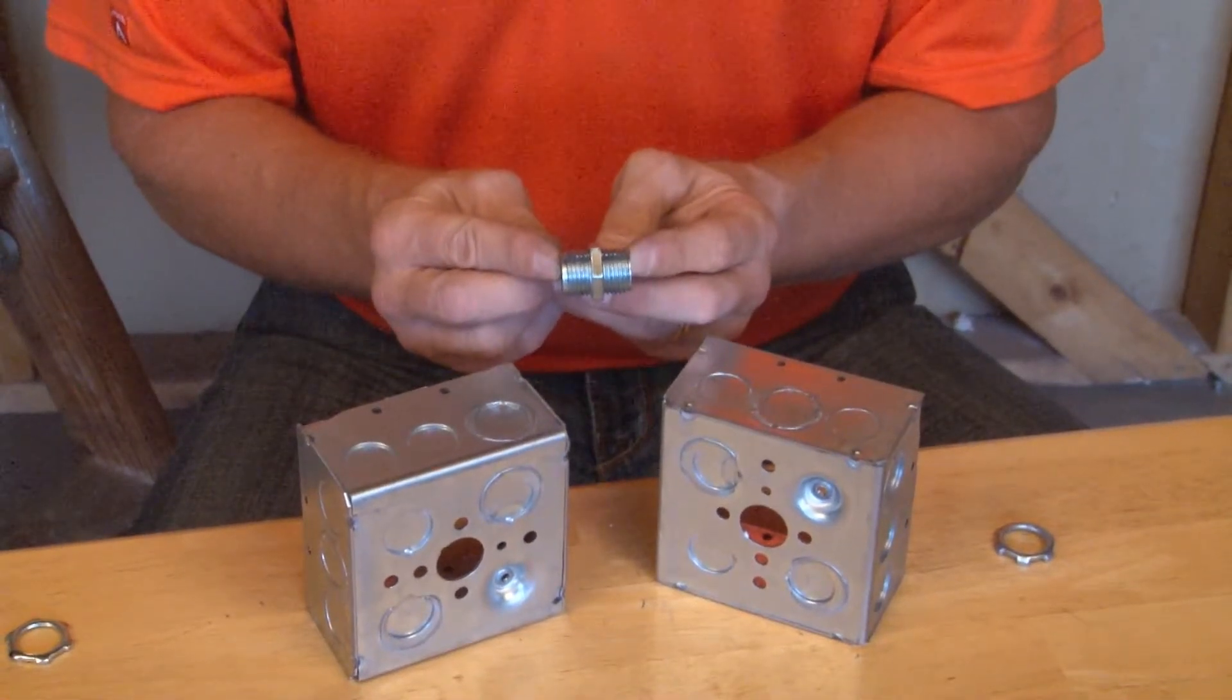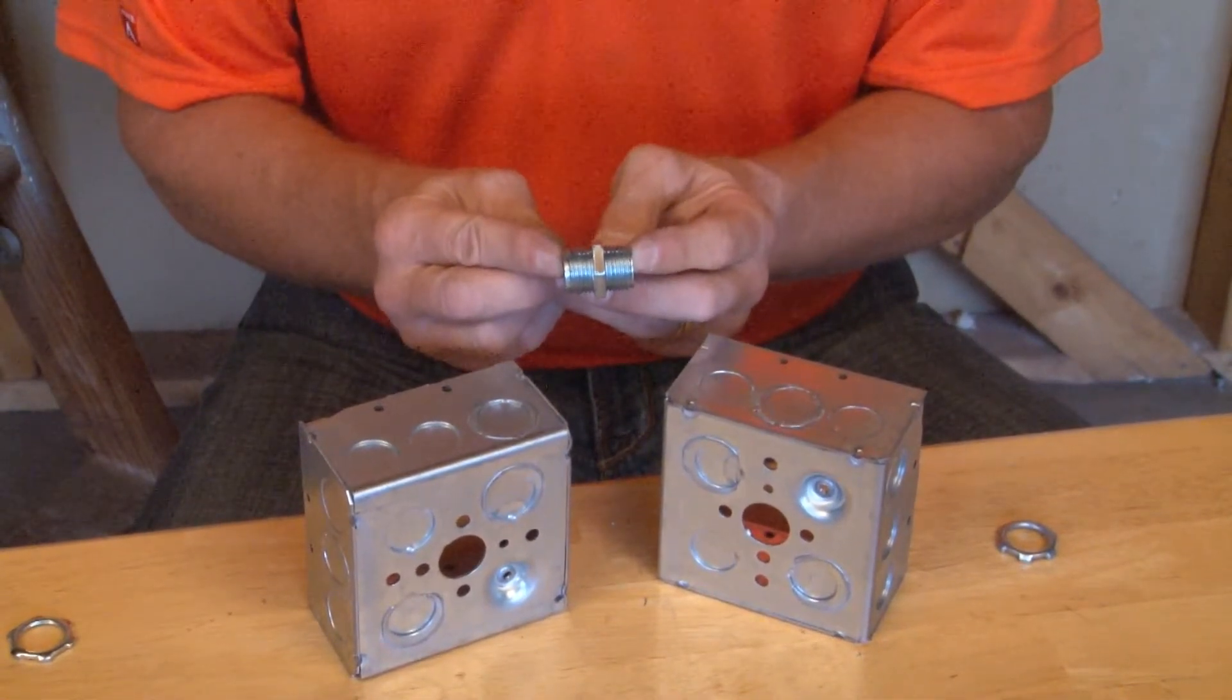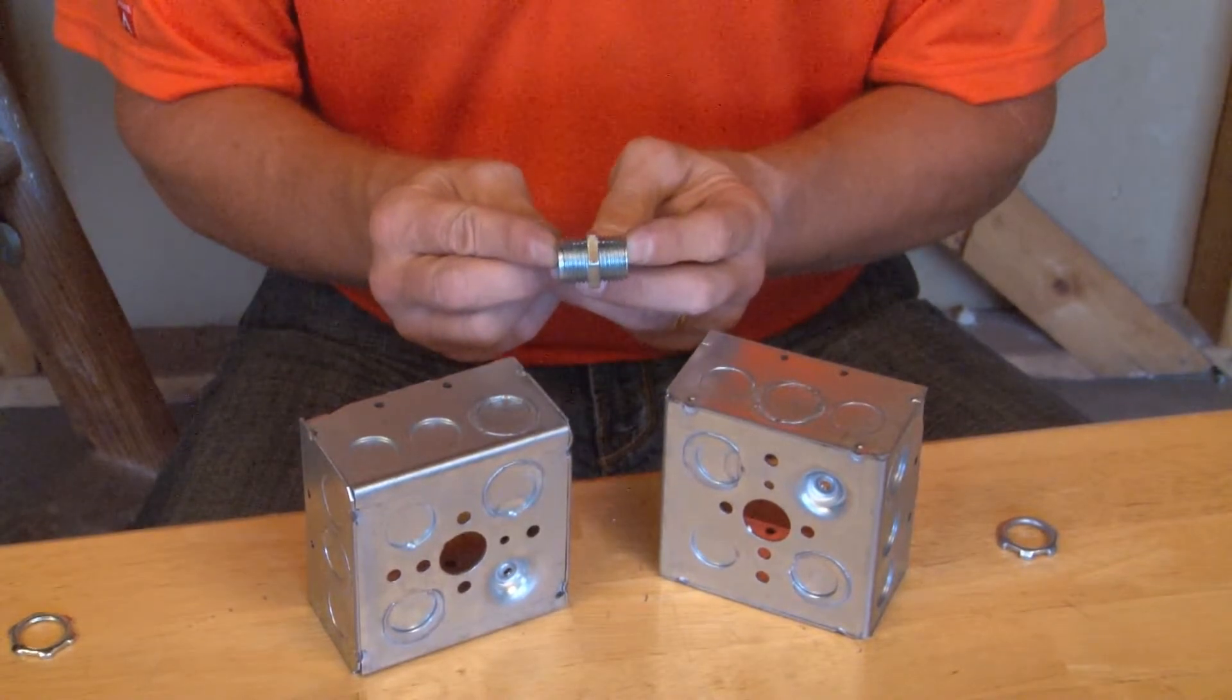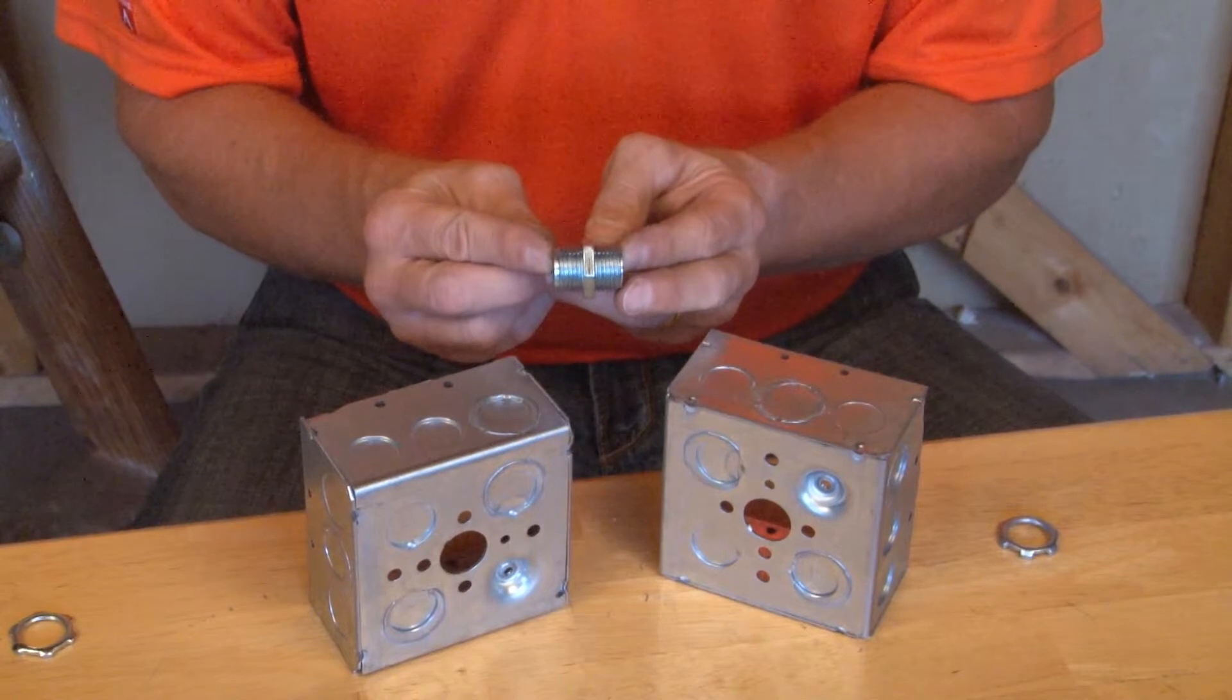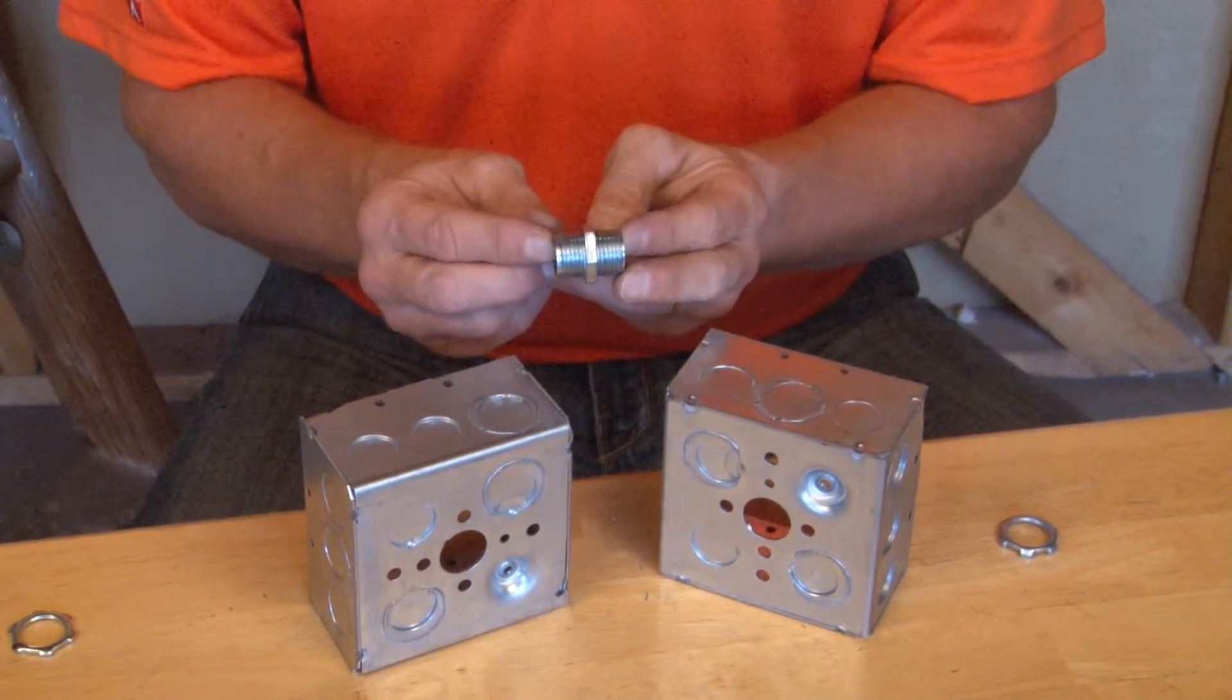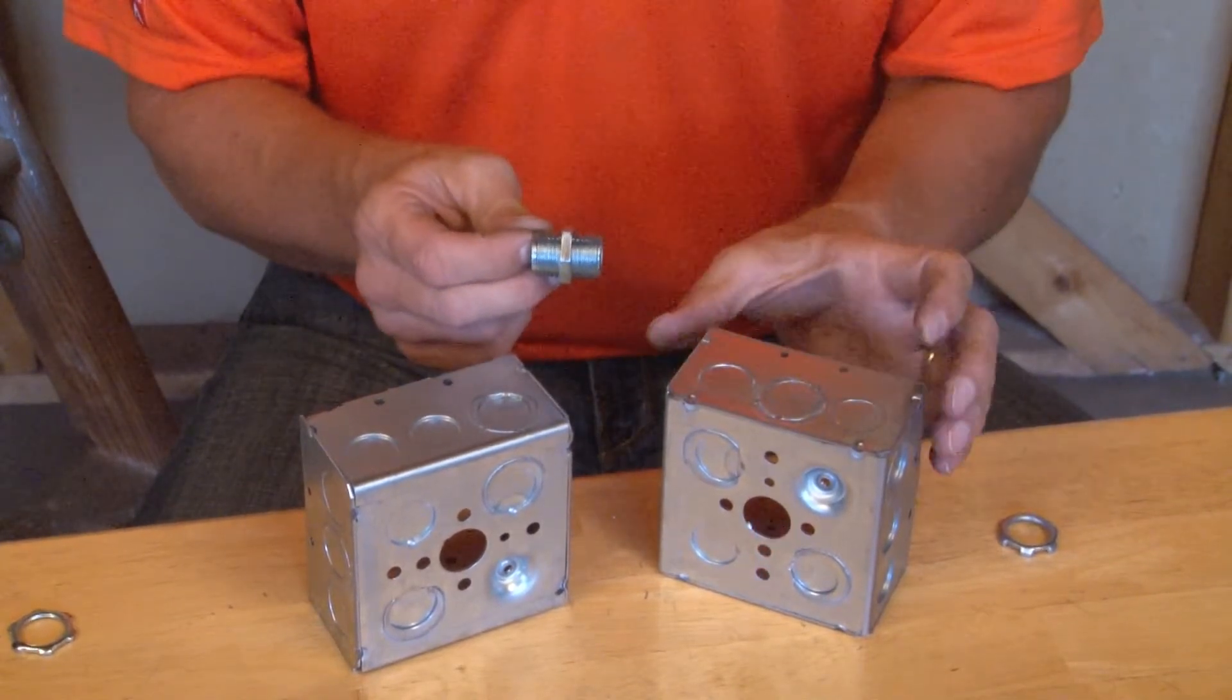Part number BB 1/2 is a back-to-back box spacer for 1/2-inch conduit. Part number BB 3/4 is a 3/4-inch back-to-back box spacer for 3/4-inch knockouts.